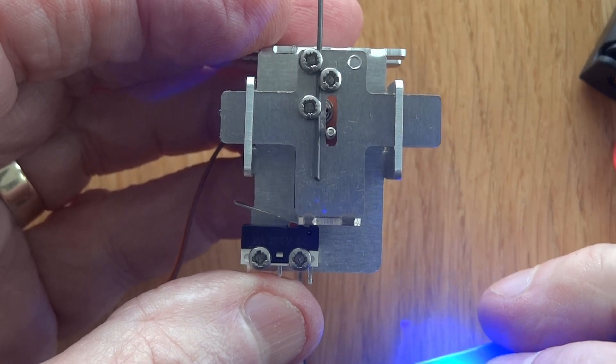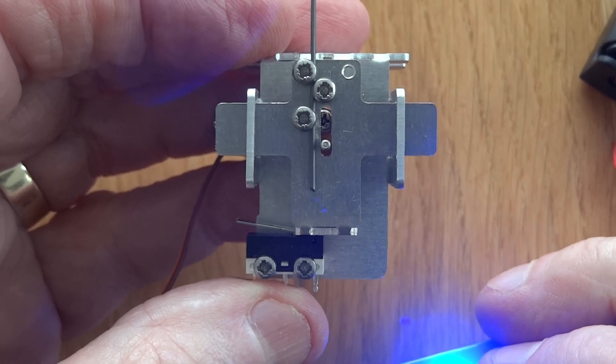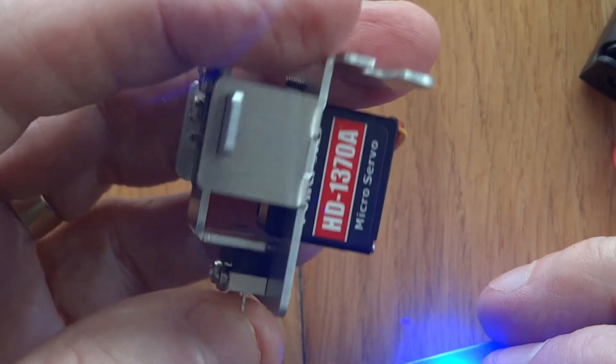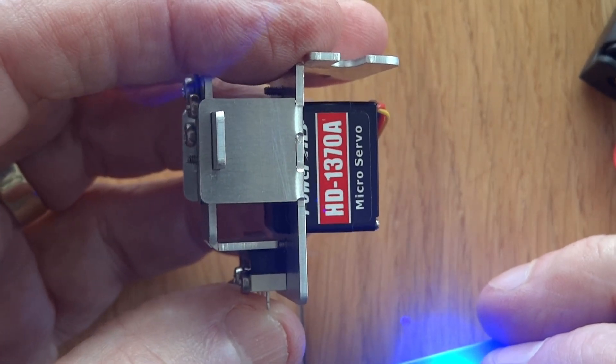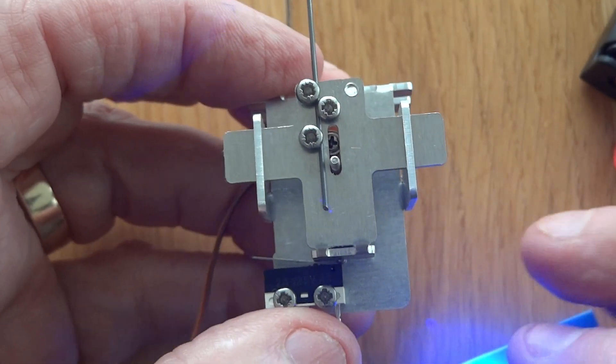Now this is very similar to the way in which we have designed the micro slim, but obviously quite a lot smaller, and it uses the same 1370A Power HD servo. The rest of everything is exactly the same.